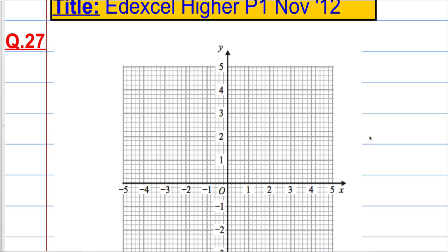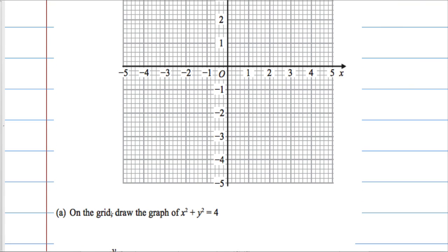Okay, question 27. We're given a grid, and on the grid we're asked to draw the graph of x squared plus y squared equals 4.